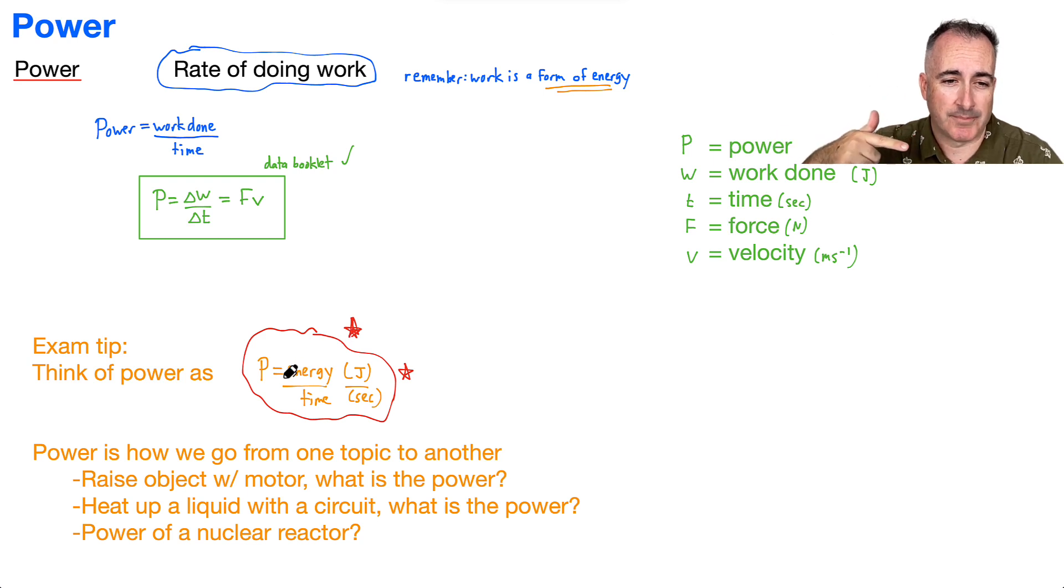I know that energy over time. In other words, if I see joules per second, oh, I know that's a power. So power could be measured in joules per second, but it has its own unit. And we call it watts.